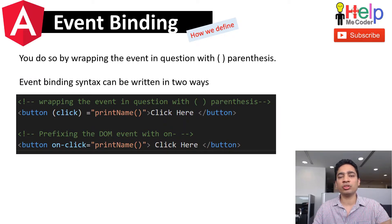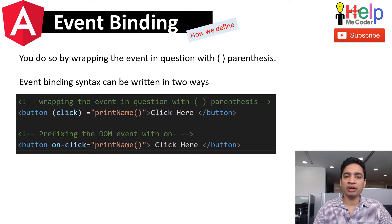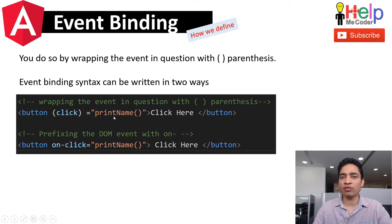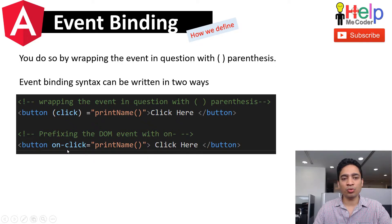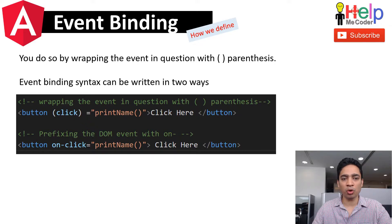Event binding syntax can be written in two ways. You can wrap the event in question with parentheses — like on this button, we have surrounded the click event with parentheses and then called the method in the code behind. Or you can prefix the DOM event with 'on' and a hyphen sign, so the click event is prefixed with 'on-' and the same method 'printName' is called. Both operations have the same result, so there is no difference between them — it all depends on how you want to write it.